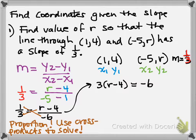Now, the simplest way to solve this is to just distribute. So I get 3 times r is 3r. And the 3 times the negative 4 is negative 12. And that equals negative 6.